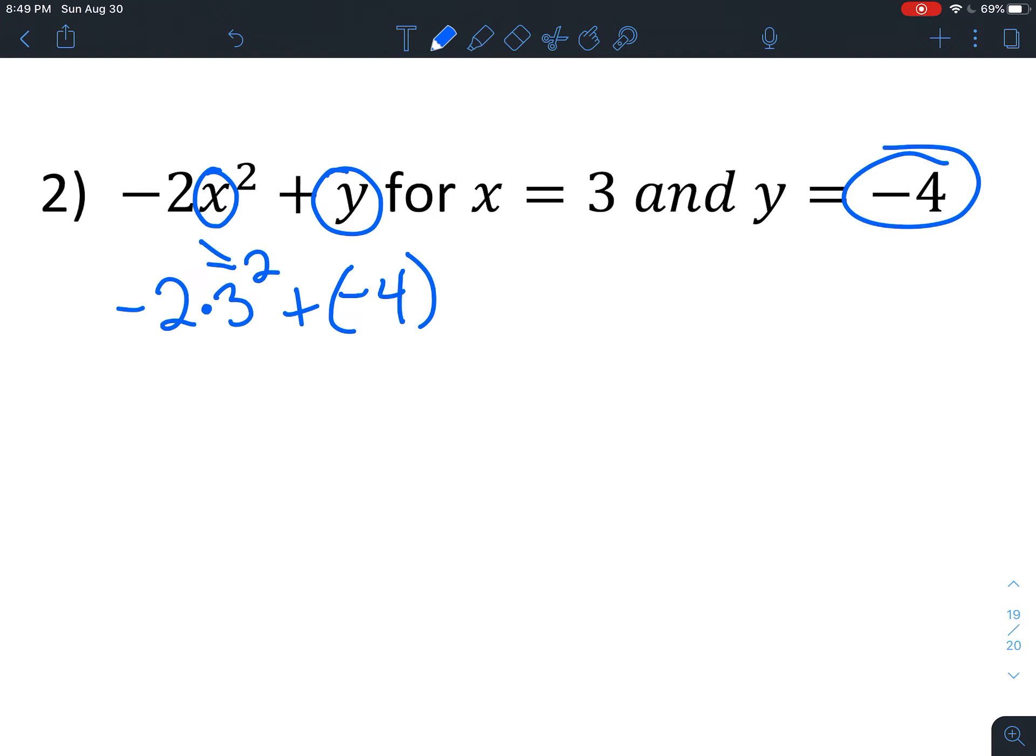Now we want to do our exponents before we do any other multiplying or adding. 3 squared. So that's right here. 3 squared is the same as 3 times 3 which is 9. Recopy everything else. And now we've got multiplying before we add. So negative 2 times 9 is negative 18 plus negative 4.